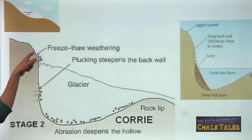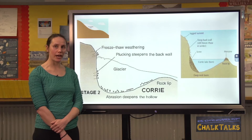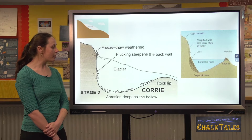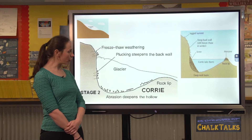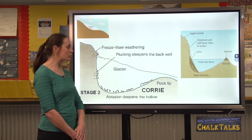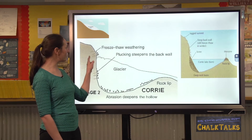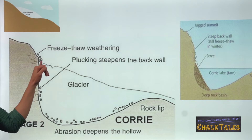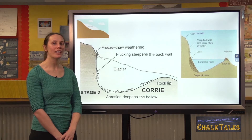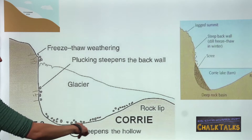Above the glacier you often have freeze-thaw weathering, which makes the cliff behind the glacier very steep and jagged and also provides more rock fragments which can fall down onto the glacier. At the front of the corrie there's often a rock lip left, because the glacier moves in a rotational way so there's less erosion at the front. As the glacier moves away from the back rock face there's also a bergschrund — a big crack between the rock and the ice — which allows rocks and meltwater to go down the back of the glacier, aiding abrasion.